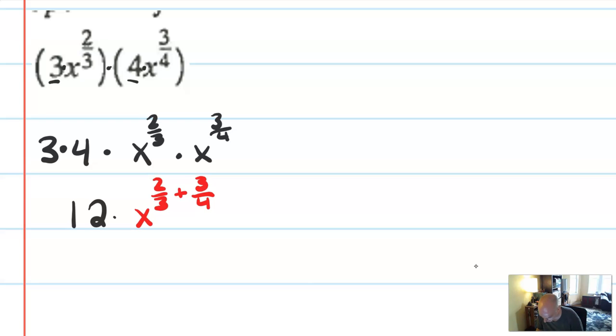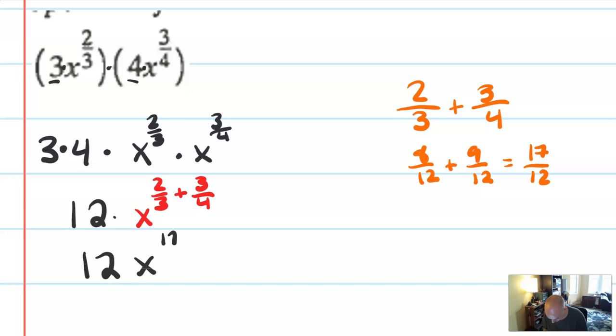Now, this is the time where I would go over on the side, do a little bit of scratch work. 2 3rds plus 3 4ths is going to be, I guess I need to be in 12ths. So this is 8 12ths plus 9 12ths, or 17 12ths. Nothing reduces. So I would write my final answer, and it's not going to be pretty, as 12 x to the 17 12ths. Those 12ths don't cancel, by the way. Don't get too excited.